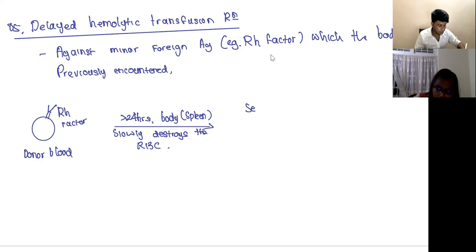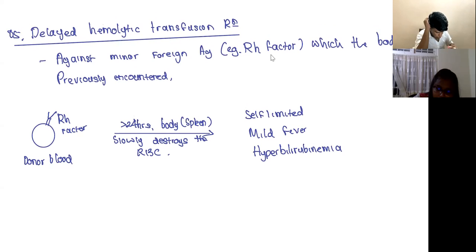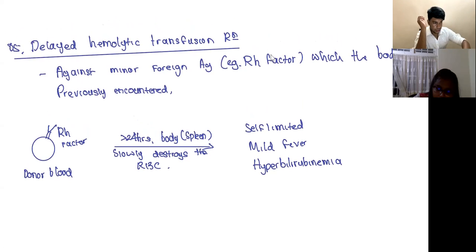And this is self-limited. You can have a mild fever. And since it's extravascular, the destruction is in the spleen, you can have hyperbilirubinemia. That means it predisposes the person to jaundice. So you can develop jaundice. So this is it for the learning part. Let's do the four questions.